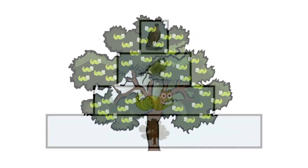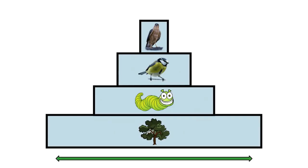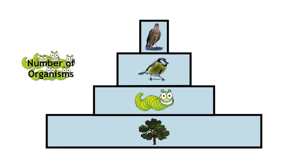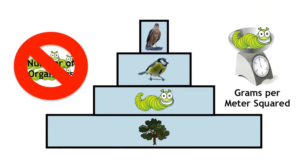Pyramids of biomass, on the other hand, are almost always largest at the bottom and then get smaller going up. This is because, rather than showing the number of organisms, they show the total mass in that trophic level.